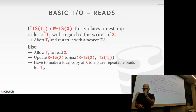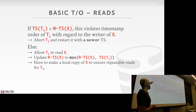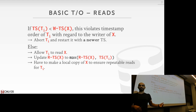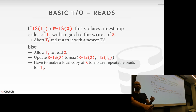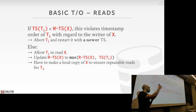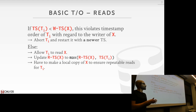For reads, there's an invariant: you must ensure that your own transaction timestamp Ti is less than the write timestamp for the tuple you're reading. This means you're not reading a value from the future — there's no newer transaction that has overwritten the value you should be reading. If this invariant is violated, you must abort.